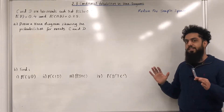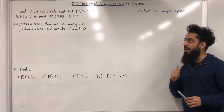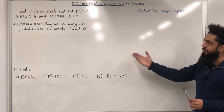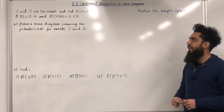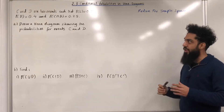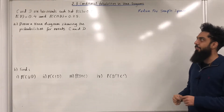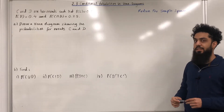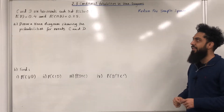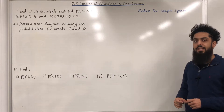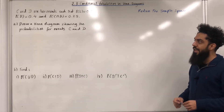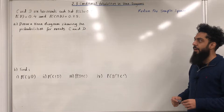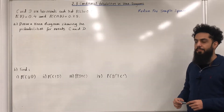I'm going to start off this teaching video by going through this example. C and D are two events such that probability C is equal to 0.8, probability D is equal to 0.4, and probability C intersect D is equal to 0.25. Part A: draw a Venn diagram showing the probabilities for events C and D.